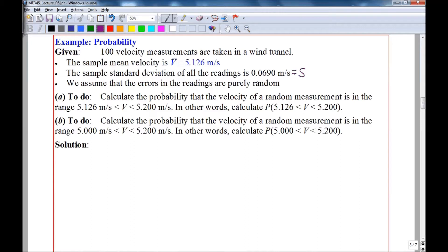Here's an example using probability. Suppose we take 100 velocity measurements in a wind tunnel. We calculate the sample mean, sample standard deviation, and we assume that all the errors in the reading are purely random. This enables us to use the Gaussian or normal PDF in these calculations.